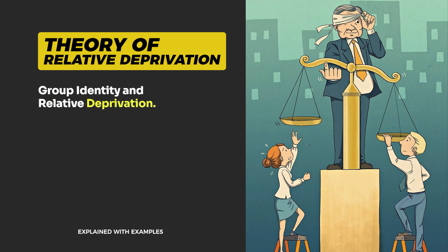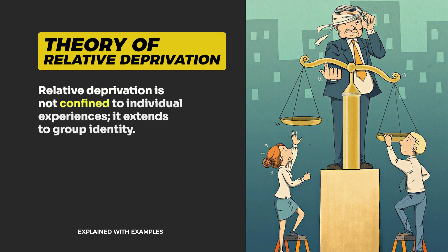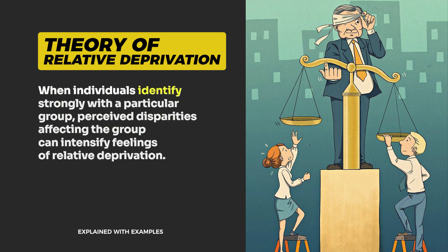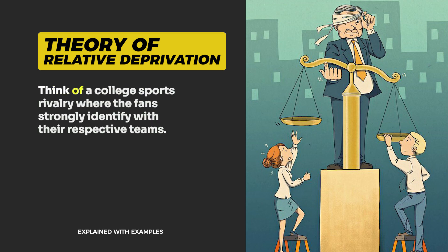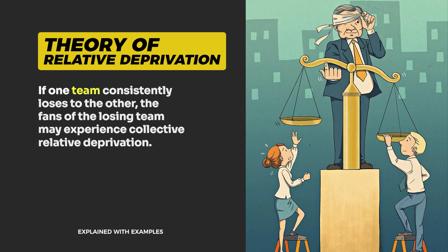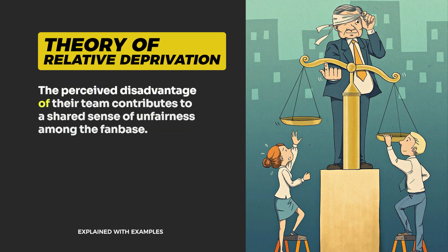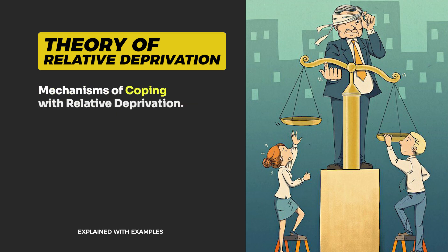Group identity and relative deprivation. Relative deprivation is not confined to individual experiences — it extends to group identity. When individuals identify strongly with a particular group, perceived disparities affecting the group can intensify feelings of relative deprivation. For example, consider a college sports rivalry where fans strongly identify with their respective teams. If one team consistently loses to the other, the fans of the losing team may experience collective relative deprivation. The perceived disadvantage of their team contributes to a shared sense of unfairness among the fanbase.